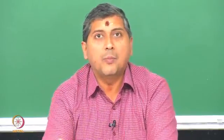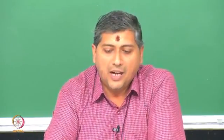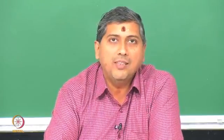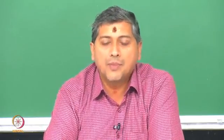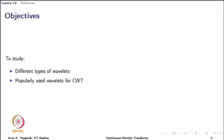Hello friends, welcome to lecture 7.6 where we shall learn briefly about the different types of wavelets used in continuous wavelet transform. Until now we have learned the concepts of CWT, the scalogram, and the concept of scaling function. In this short lecture we shall look at a few popularly used wavelets for CWT and towards the end study an important property known as the vanishing moments property of the wavelet.